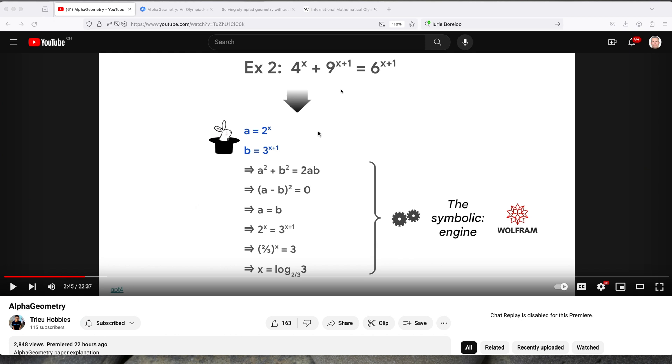In the video around the three-minute mark, I think the author gave a really fantastic example. So think about this equation right here. So 4 to the x power plus 9 to the x plus 1 power equals 6 to the x plus 1 power. This problem looks scary to any high schooler, I think.